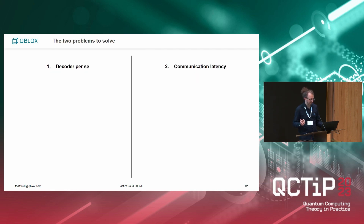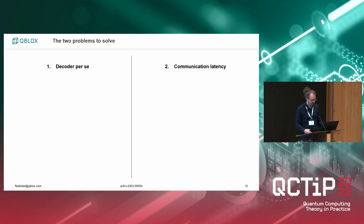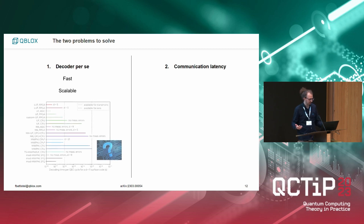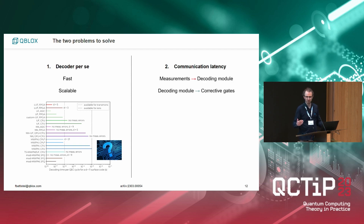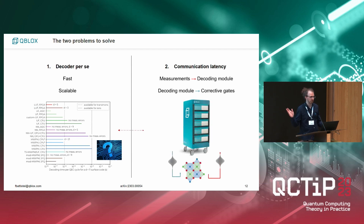Summarizing, there are two main contributions to the total time for decoding. One is the decoding time per se — it needs to be fast, scalable, and accurate; our paper reviews the current literature on this. The other is the communication latency of measurement outcomes to the decoding module in the stack, and then feedback back for corrective operations based on the decoding result. That's where we see our expertise at QBlocks, and where we want to collaborate with decoder developers.